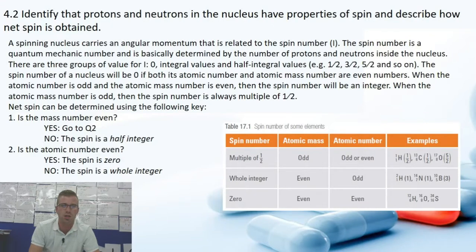So using these two questions you can determine the spin number by using the properties of mass number and atomic number.